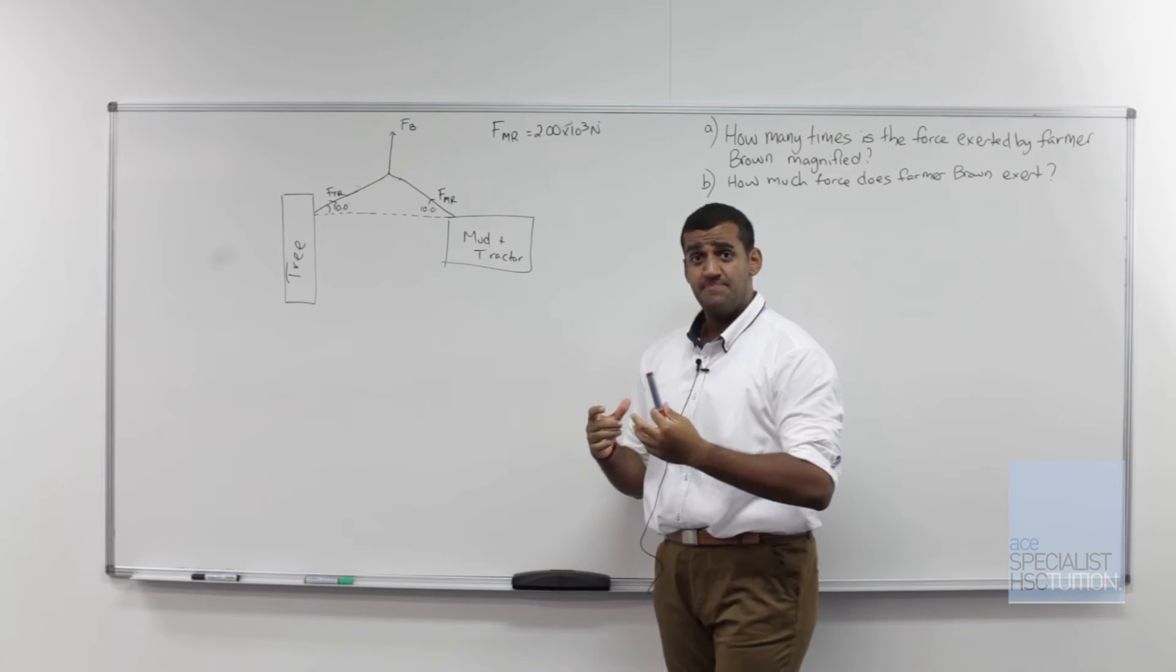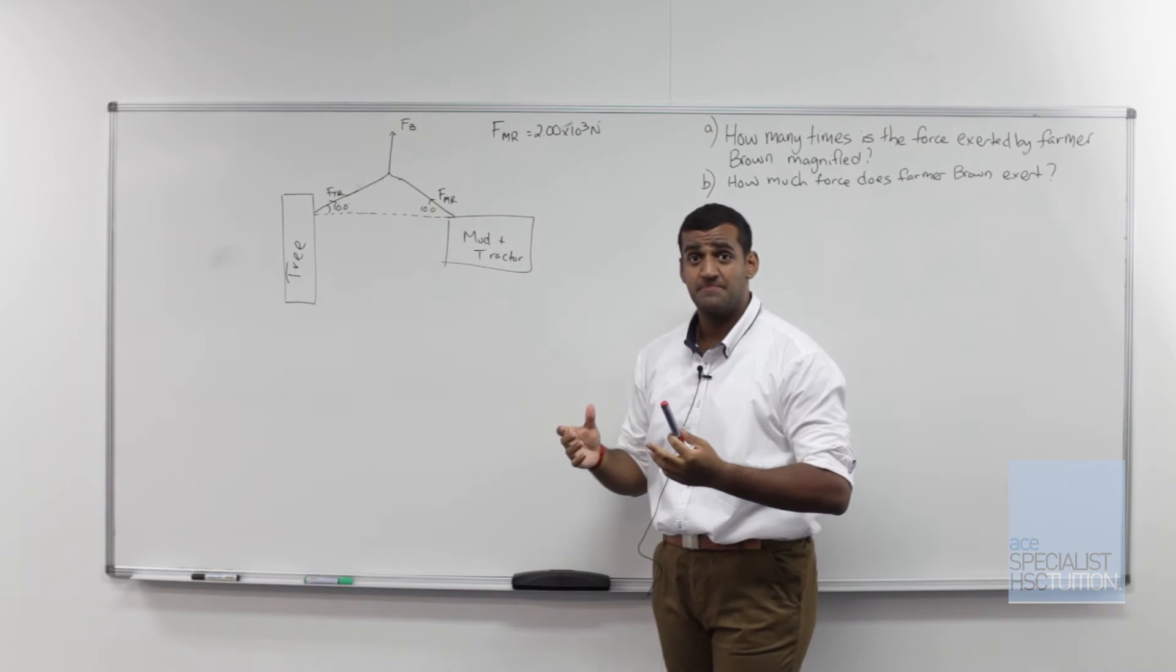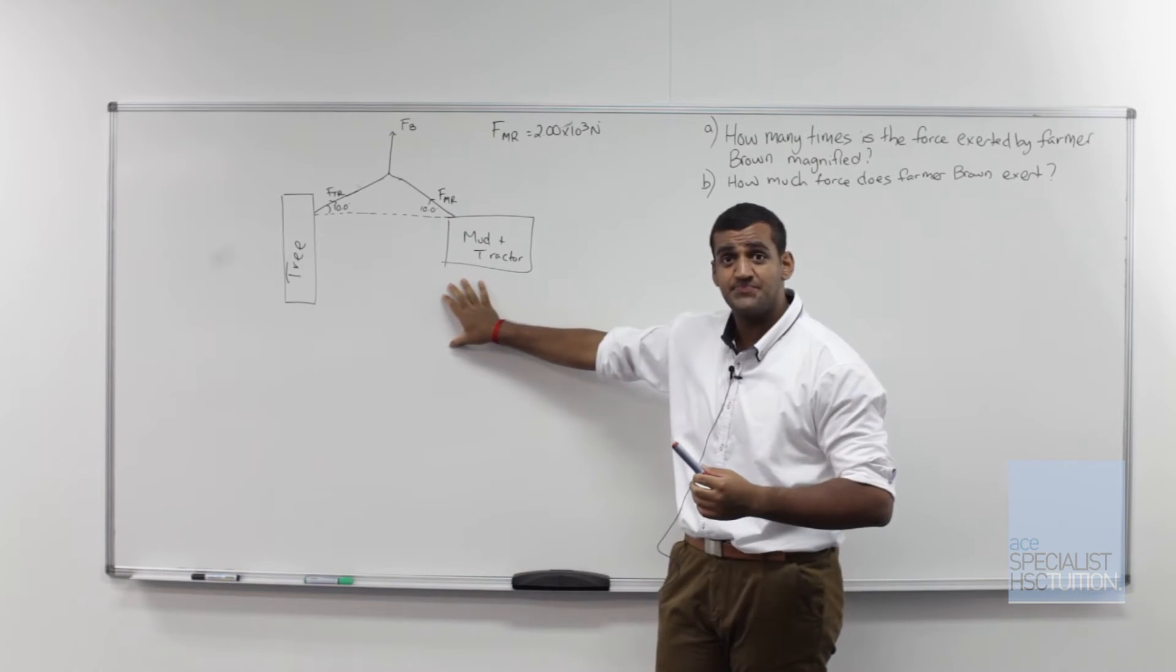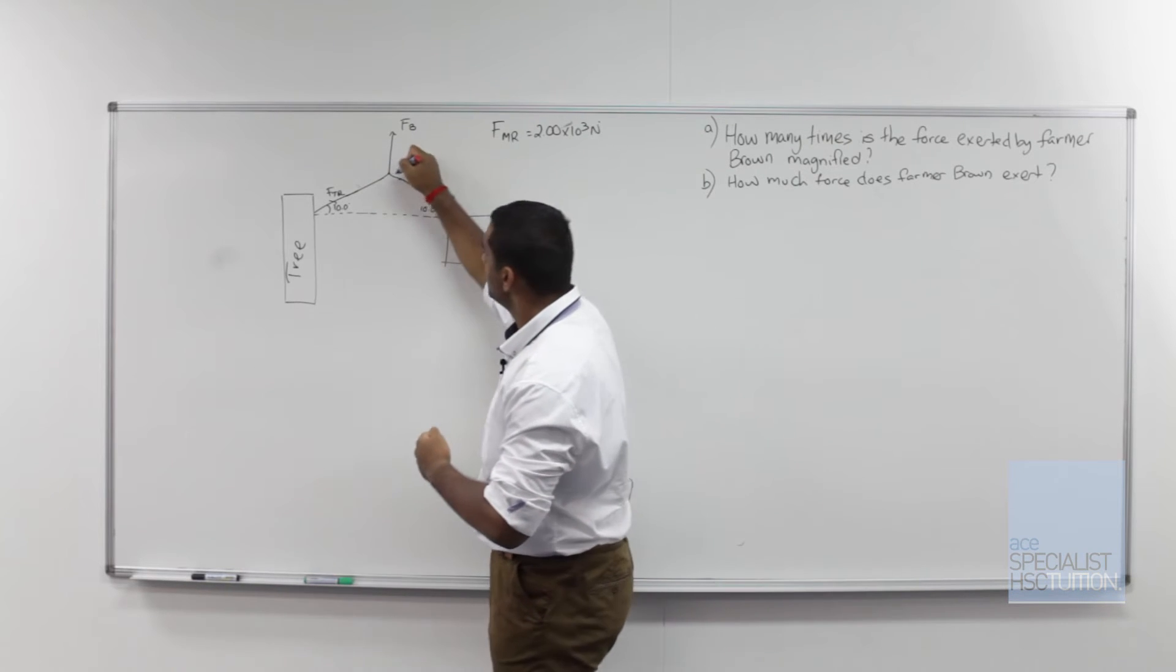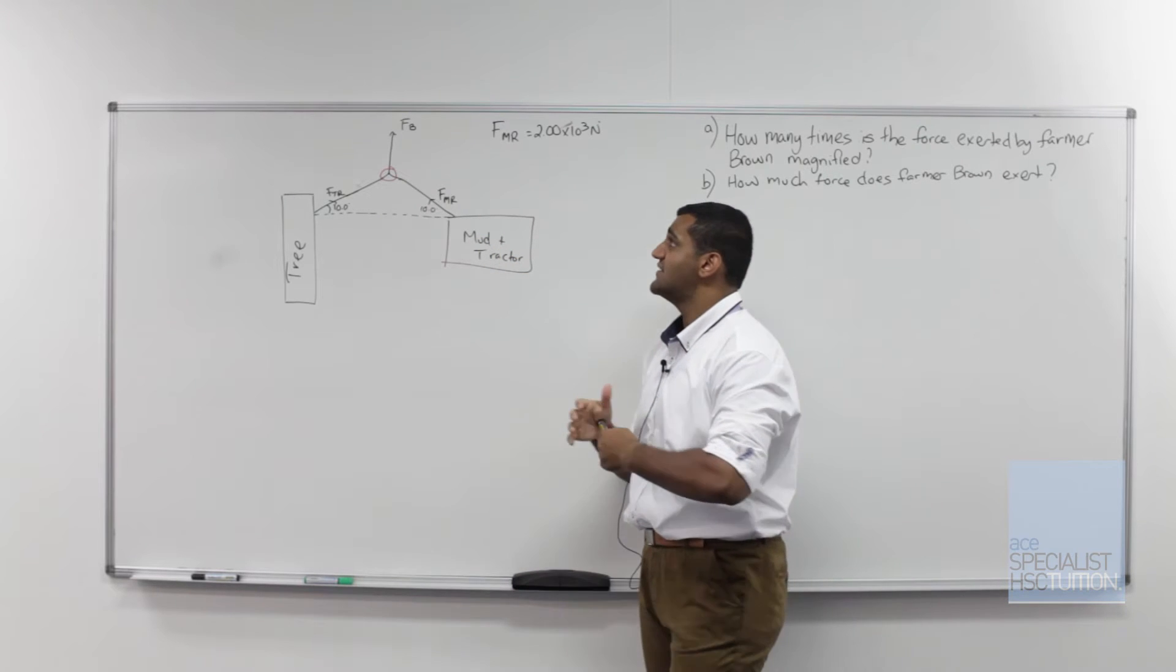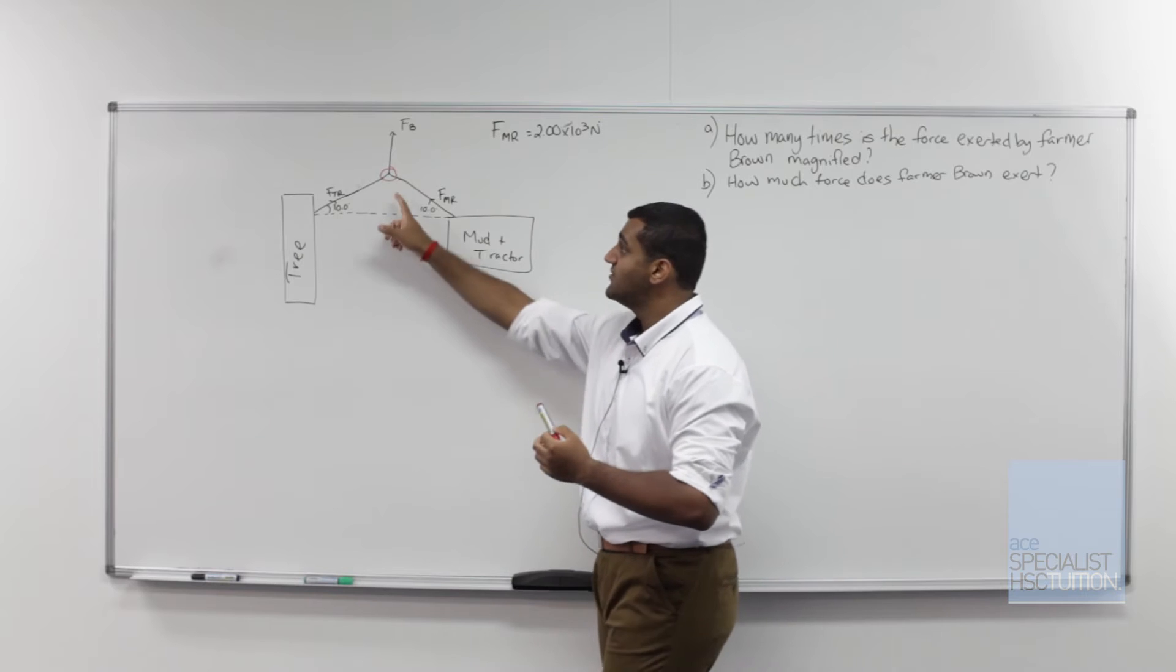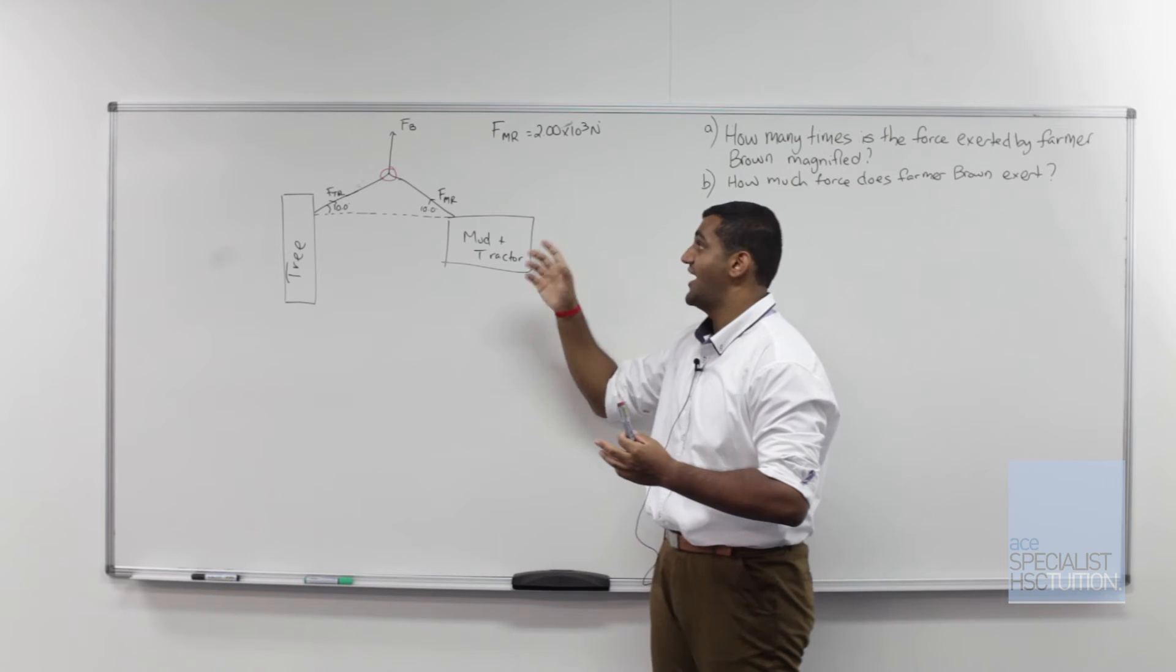In our question today, we've got Farmer Brown who's got his tractor stuck in the mud. To pull his tractor out of the mud, what he does is he ties this rope, the rope in black here, to a tree and the tractor. Then he exerts a force FB right at the middle of his rope at this point here. We're trying to see if we can look at the forces here. There's a force that Farmer Brown exerts on the rope pulling the rope away to pull his tractor out of the mud. Then that rope also exerts a force on the tree FTR and a force on the tractor FMR.